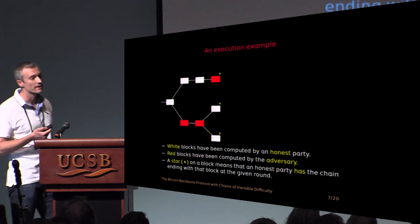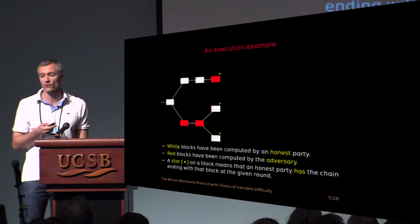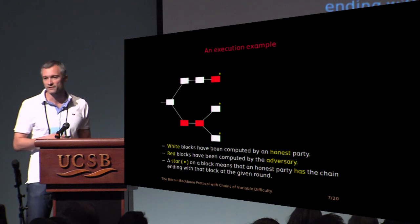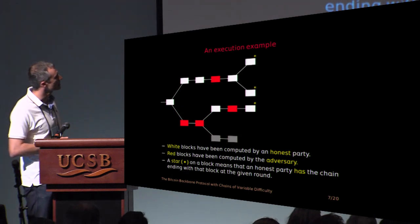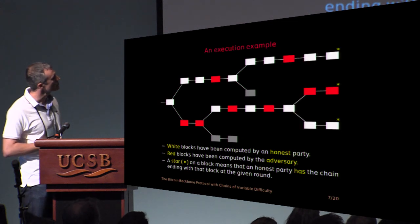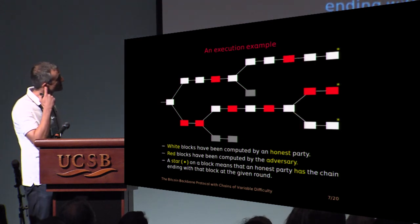Similarly here, or the honest parties, two honest parties may compute a block on the same round, and this way they just fork by themselves. So this can continue like so. In the end, you can have a picture like this.